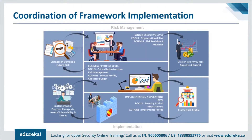The framework helps guide key decision points about risk management activities through the various levels of an organization. As shown in the picture, it describes a common flow of information and decisions at the following levels: executive, business or process, and implementation or operations. The executive level communicates mission priorities, available resources, and overall risk tolerance to the business process level. The business or process level uses this information as input into the risk management process and collaborates with the implementation level to communicate business needs and create a profile. The implementation or operations level communicates profile implementation progress to the business level, which then performs an impact assessment and reports outcomes to the executive level.